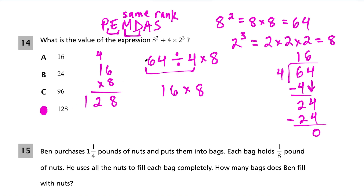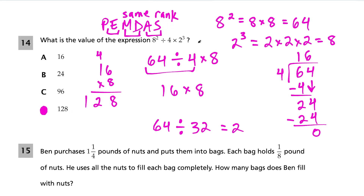One important warning: students may be tempted to do 4 times 8 first, getting 32, then 64 divided by 32 equals 2. But multiplication and division have the same rank — so do addition and subtraction. When only multiplication and division remain, you go left to right. The same applies to addition and subtraction.